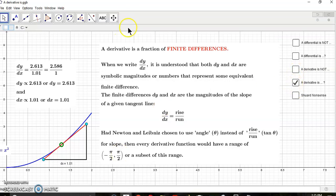So that's what a derivative is not. Basically a derivative is just a fraction of finite differences dy to dx, and it is understood that both dy and dx are symbolic magnitudes or numbers that represent some equivalent finite difference.